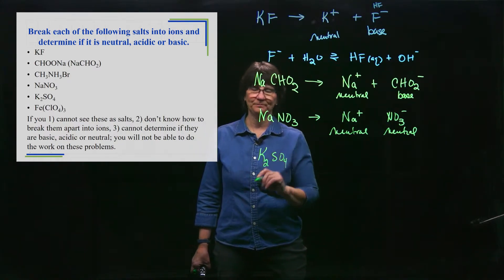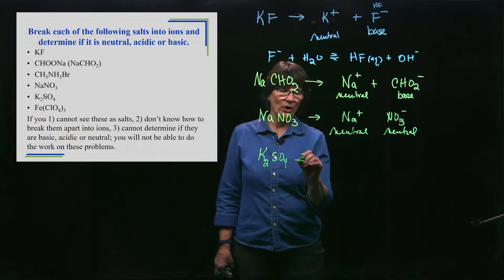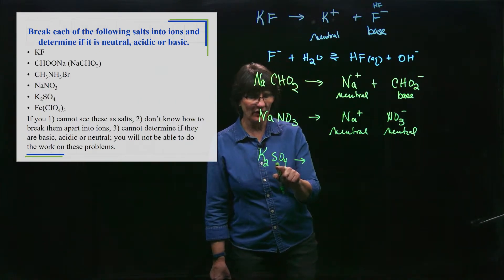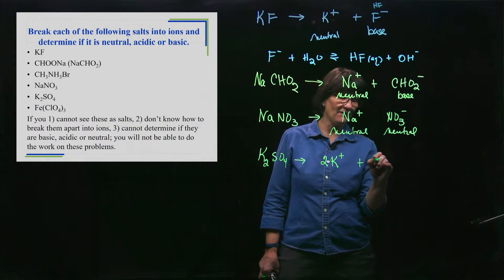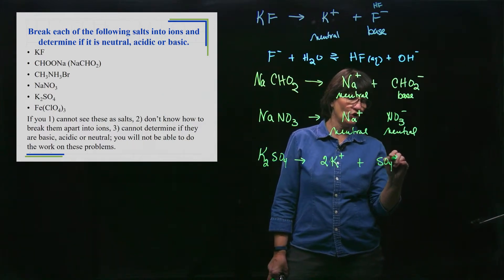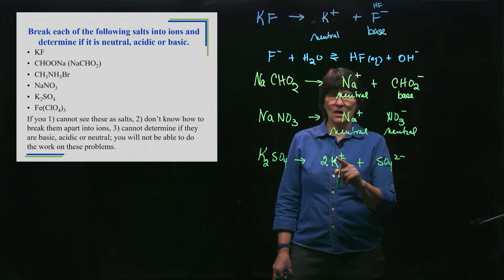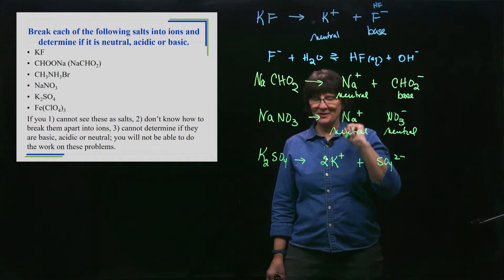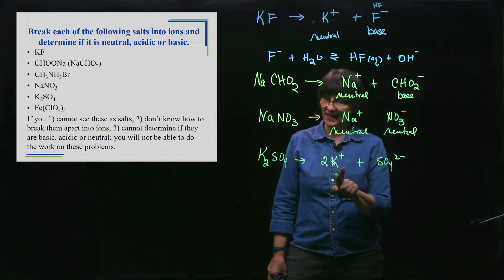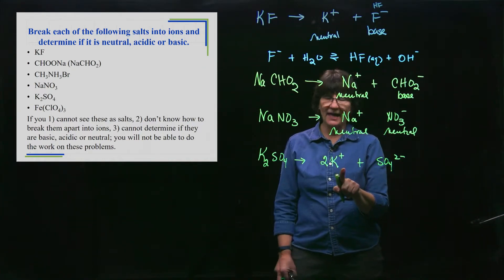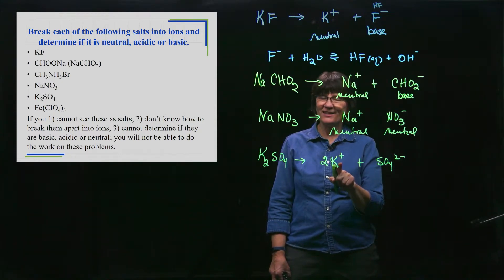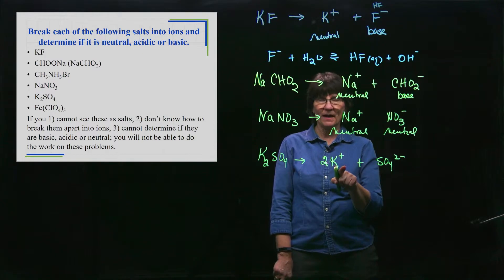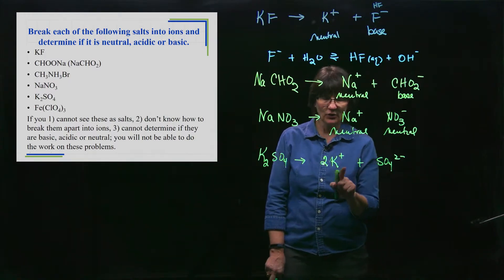K2SO4 - this is a tricky one for students. We know it breaks apart. Here's my cation, there's my anion. I have a couple of K+ and I have SO4 2-. For the same reason that this is neutral and this is neutral, this is neutral. It doesn't have a proton to donate, it's not going to accept a proton because it's positively charged. It is not a small, highly charged metal - there's no high charge - so this is neutral.